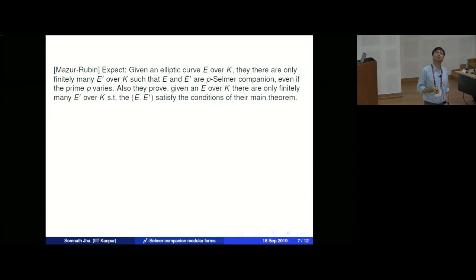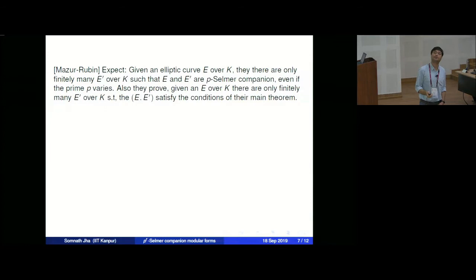This is clearly not the case for modular forms. Mazur-Rubin prove their main theorem — that there are only finitely many E′ satisfying the conditions of their theorem — and in general they expect there to be only finitely many E′ that are companion to E (though they did not prove it). But our situation is clearly different.